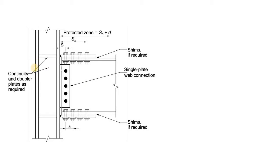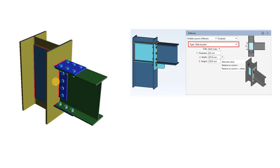In any moment connection detailing, you may see that a continuity plate — also called a stiffener — has been used, and it is also mentioned that a doubler plate is required as needed. First, let's learn why this continuity plate or stiffener is required in a moment connection, and then I will discuss why the doubler plate is also required.